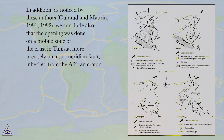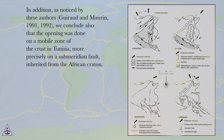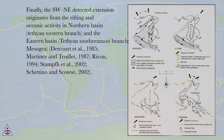In addition, as noticed by Garou and Morin, 1991, 1992, we conclude also that the opening was done on a mobile zone of the crust in Tunisia, more precisely on a sub-meridian fault inherited from the African Kraton.